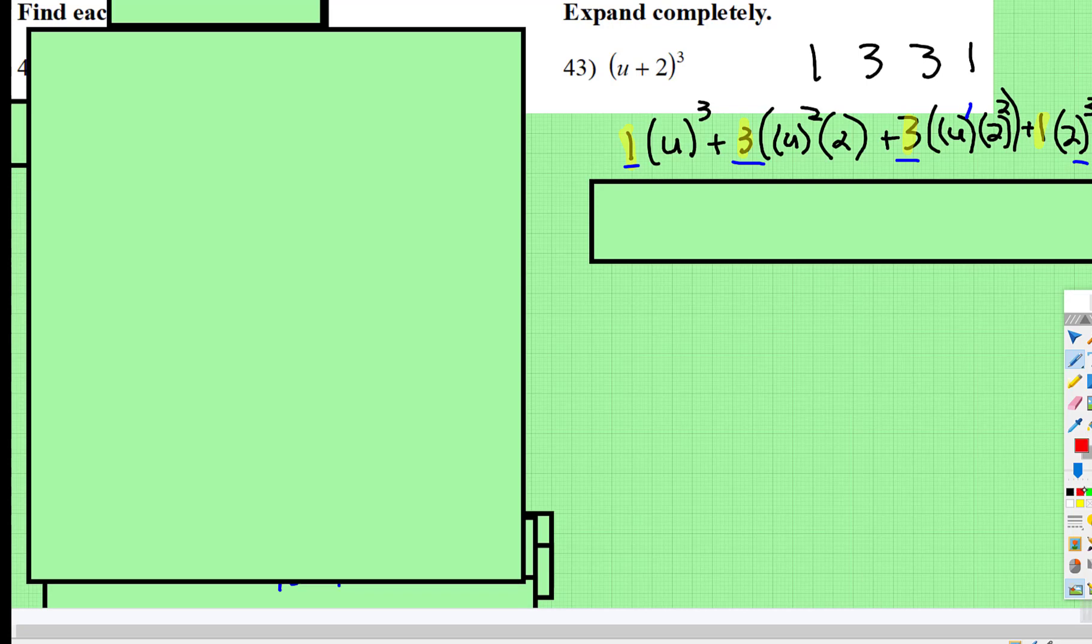Then I'm going to switch to the twos. From the right, 2 cubed, 2 squared, 2 to the first, and then to the zero, we don't have to write it. And now we just simplify.